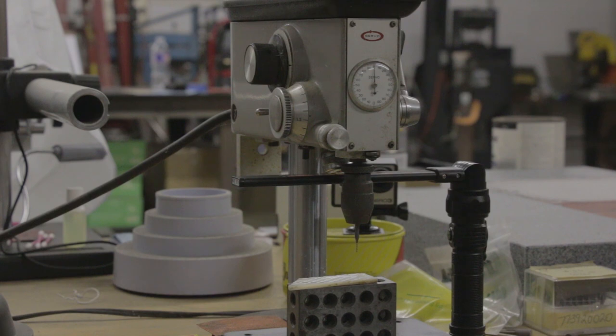Notice that even at 12 to 15 thousand RPM I have to peck drill these holes to clear the flutes on this tiny twist drill.